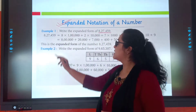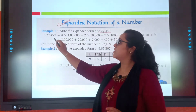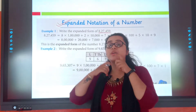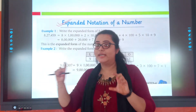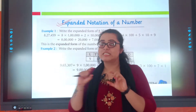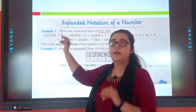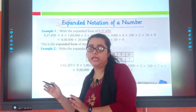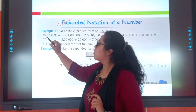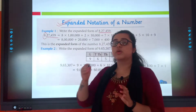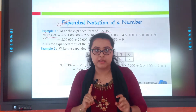Expanded form means you have to write 8,27,459 equals to: 8,000,000 plus 20,000 plus 7,000 plus 400 plus 50 plus 9. That means we will write it out in expanded form. Okay?